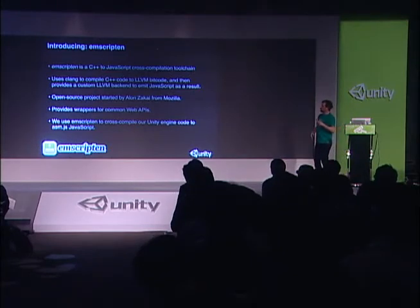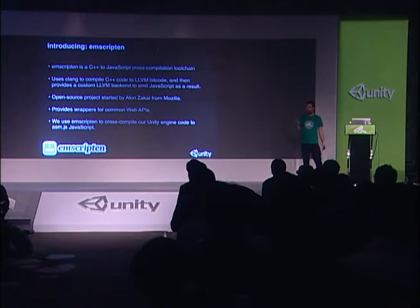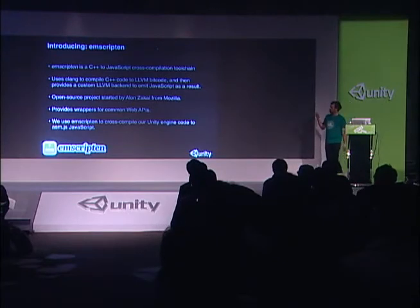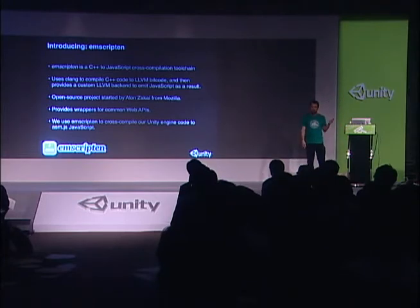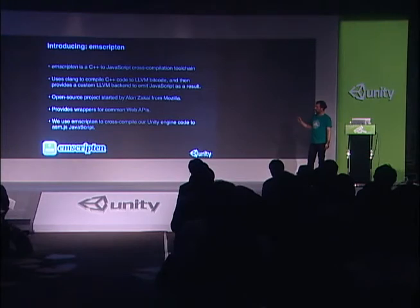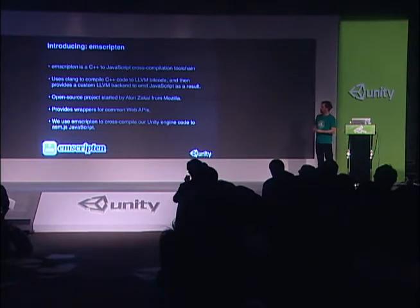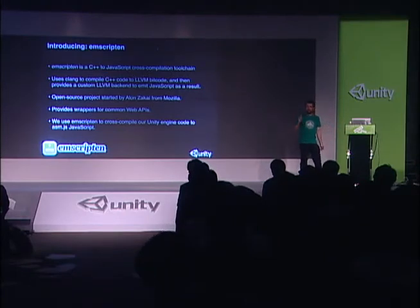On top of providing the compilation toolchain, Emscripten also has a set of libraries to wrap common web APIs to corresponding C++ functions. If you want to use WebGL using Emscripten, you just write your C code to use OpenGL ES 2.0, and Emscripten has wrappers which map that to corresponding WebGL APIs. Likewise, if you need to store data on disk, you use the POSIX file APIs and Emscripten maps that to HTML5 file APIs.